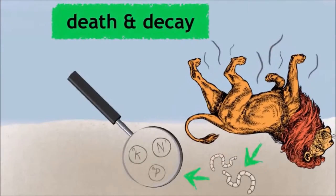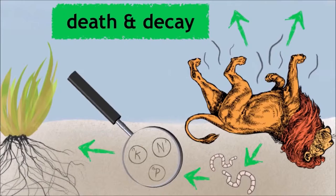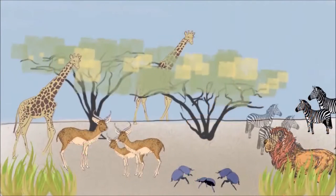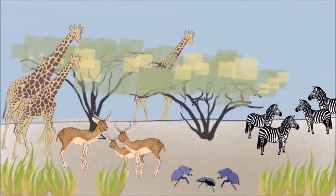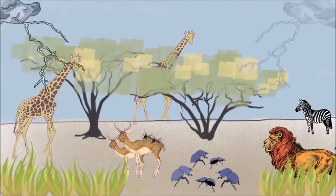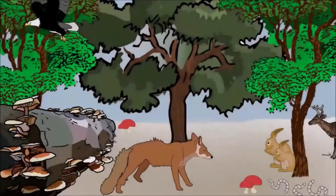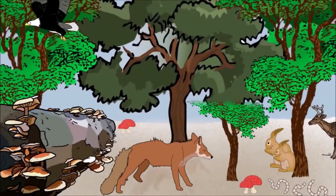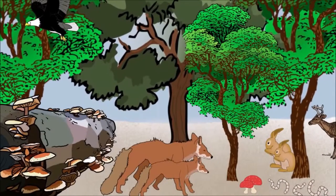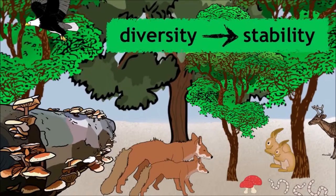Cycles are often completed by death and decay, which is vital for all organisms as they return many vital nutrients to the producers and the atmosphere. Ecosystems are incredibly dynamic as populations of organisms increase and decrease and climatic conditions alter. Some ecosystems can be very stable, changing very little over long periods of time. Generally, the more diverse an ecosystem is, the more stable it will be.